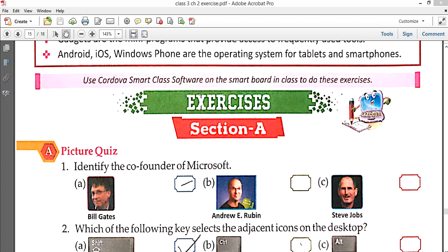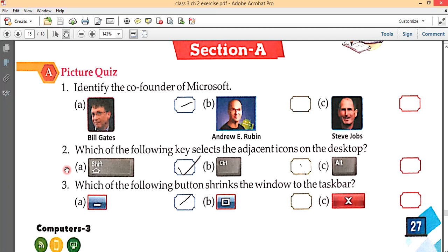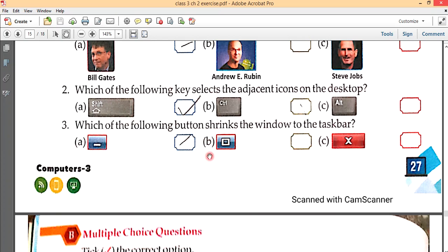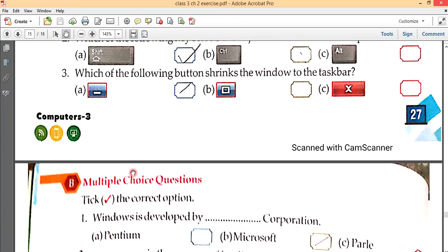Hello class third, this is Manoj Upadhyaya and we are going to complete chapter number two. Let's begin with the picture quiz. Identify the co-founder of Microsoft - it is Bill Gates. Which of the following key selects the adjacent icons on the desktop? That is Shift. And which of the following button shrinks the window to the taskbar? That is the minimize button.